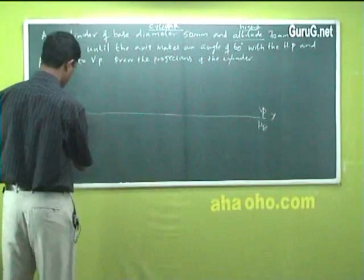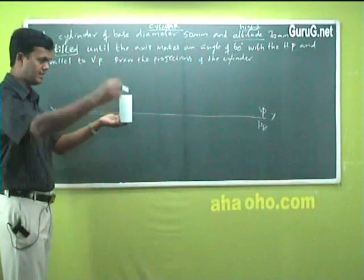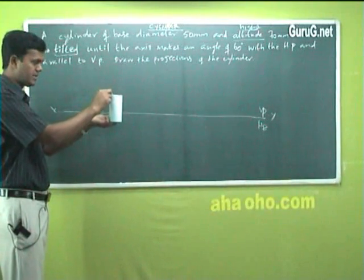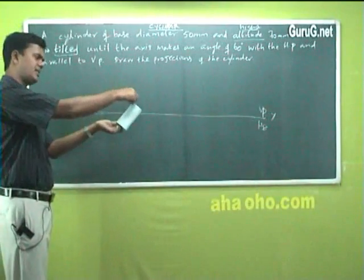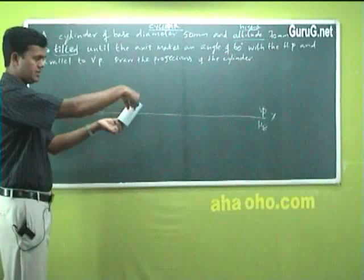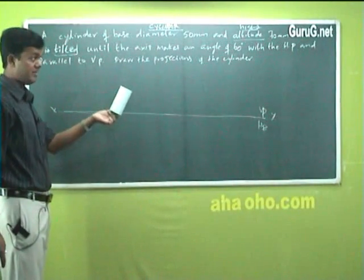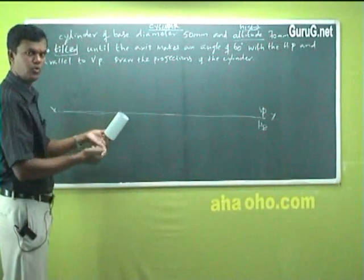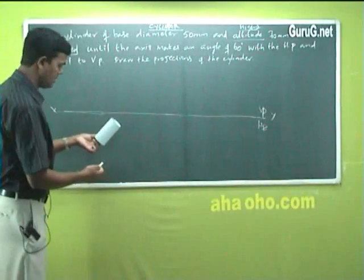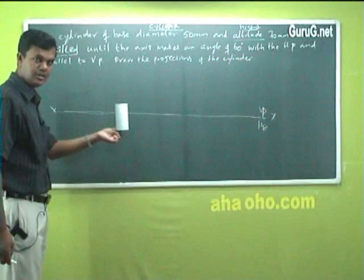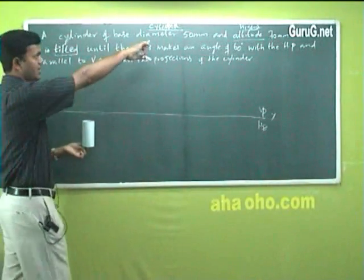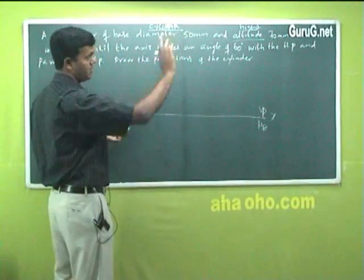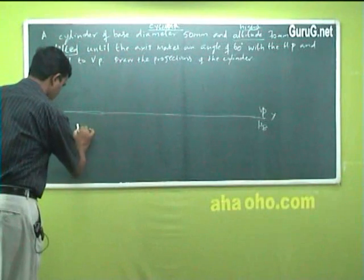I should first make the cylinder parallel to VP. Now if it is tilted like this, or you can tilt like this, no problem. Axis can be tilted anywhere. When the axis is tilted 60 degree to HP, you are dividing a circle into many parts. In the top view, I see the true shape with the diameter of 50 mm. The front view, I can see the altitude or height of 70 mm. So, top view I am making like this.